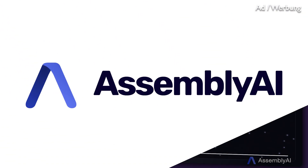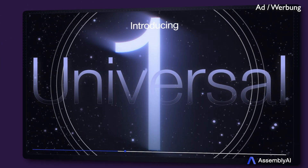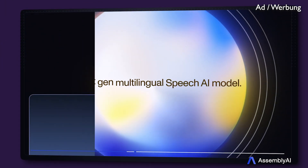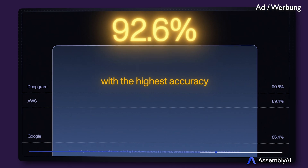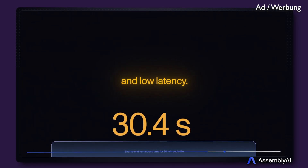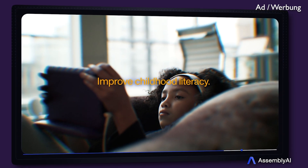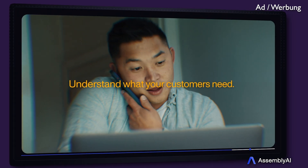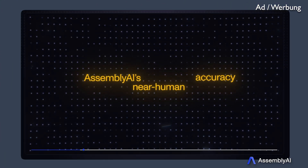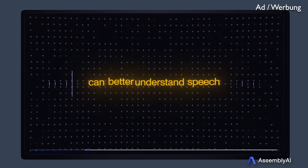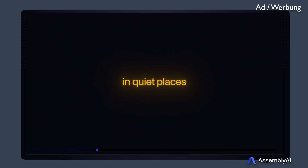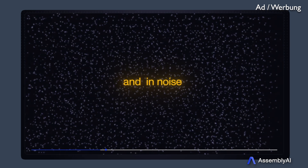But first let's thank our sponsor of today, Assembly AI. Just last month they released the Universal One Automatic Speech Recognition Model. It offers more than 92.5% accuracy with only 30.4 seconds of latency thanks to its effective parallelization during inference. Accuracy is important when it comes to understanding my Eastern European accent pronouncing technical words like GAN, GPT model, or RLHF.